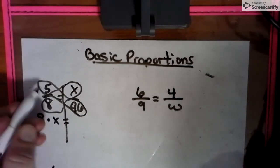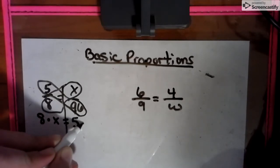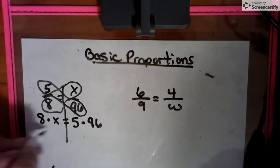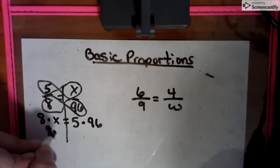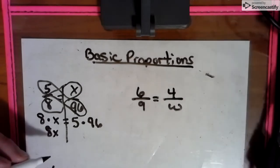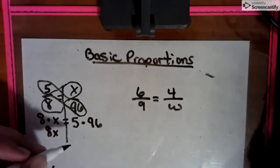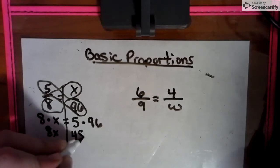And then that's one diagonal. Then we put the others on the other side, 5 times 96. We put these together. 8 times X is just 8X. Put those together. And when we do 96 times 5, we get 480.